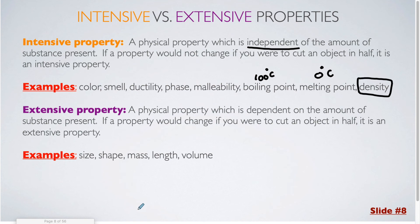Extensive property. This is a physical property which is dependent on the amount of substance present. If a property would change if you were to cut an object in half, it is an extensive property. So let's think back to that blue piece of construction paper again. If I tear that paper in half, each of those two halves is going to have half of the size that it was before. Maybe I'm measuring it in terms of length, which would also change. Or the mass. I would have half as much mass in either of those pieces of paper as opposed to the original when it was whole. The shape could also potentially change. Or the volume.